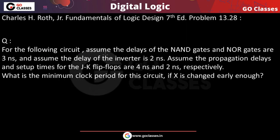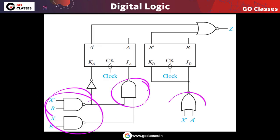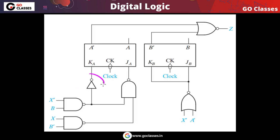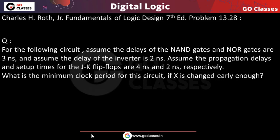The question states: assume the delay of NAND gate and NOR gate is 3 nanoseconds — so for these gates the propagation delay is 3 nanoseconds. The delay of an inverter is 2 nanoseconds. The propagation delay of the JK flip-flop is 4 nanoseconds and the setup time is 2 nanoseconds.